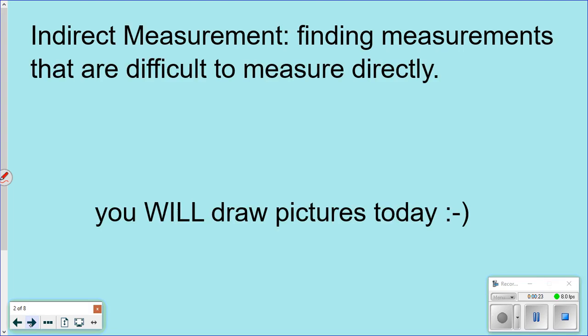First vocabulary word I have is indirect measurement, and that is finding measurements that are difficult to measure. For example, like a tall tree, a tall flagpole, a tower, things that you could not physically measure because you don't have enough equipment, you're not tall enough, you don't have enough yardsticks, things like that.